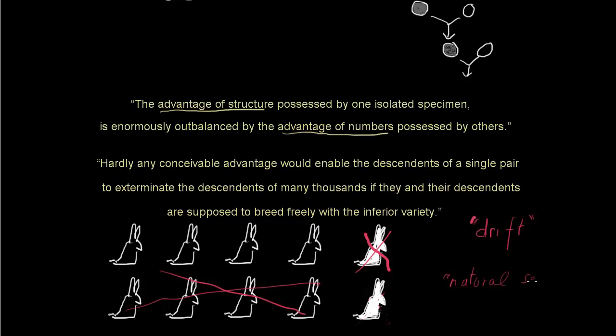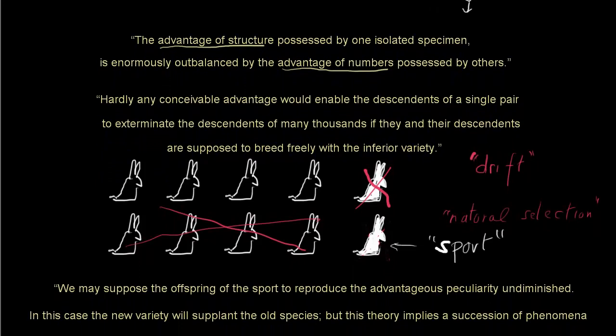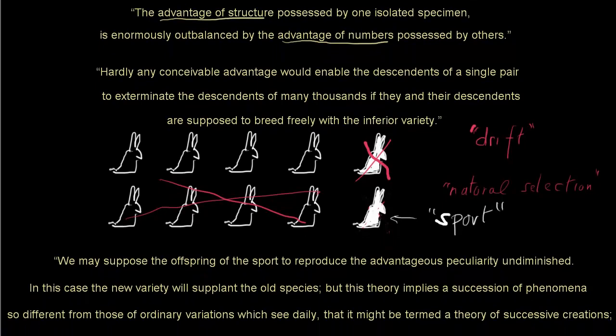Here the rare variation might have conferred resistance to a rabbit plague, like myxomatosis. So, in an epidemic, natural selection could determine that white was the solitary survivor. However, Jenkin in 1867 would have declared this to be a rare sport and would suggest that we may suppose the offspring of the sport to reproduce the advantageous peculiarity undiminished. In this case, the new variety will supplant the old species.